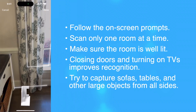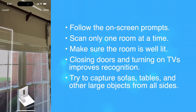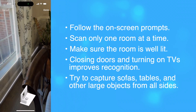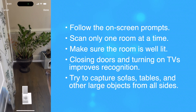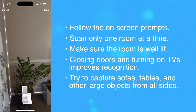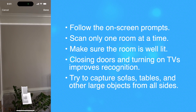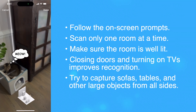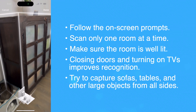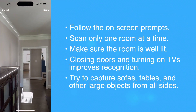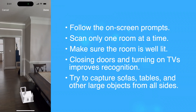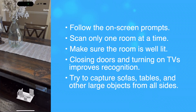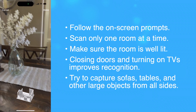For the best results, the room should be well lit. Open the window curtains to allow natural light if possible. The scanner can detect larger objects in the room, such as sofas, tables, and beds. Making sure you get these objects fully in frame improves recognition and size detection, as does making sure the doors in the room are closed.